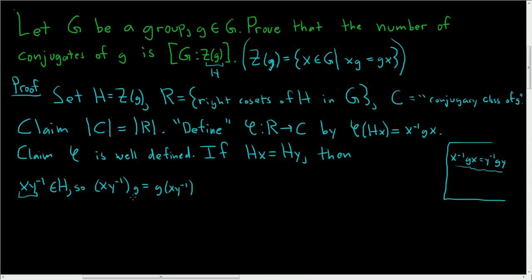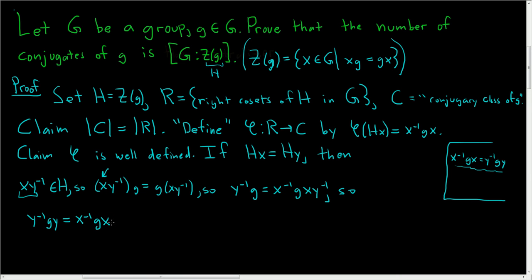Multiplying by x⁻¹ on the left: y⁻¹g = x⁻¹gxy⁻¹. Then multiplying by y on the right: y⁻¹gy = x⁻¹gx, since y times y⁻¹ is the identity. So if Hx = Hy then the outputs are the same. Hence phi is well-defined.